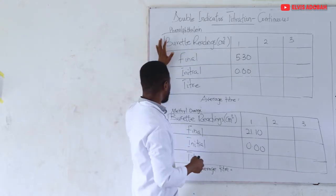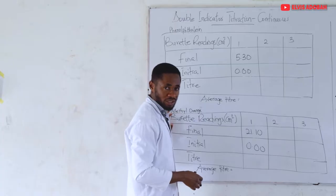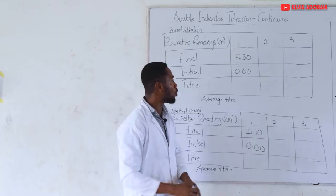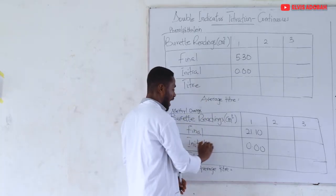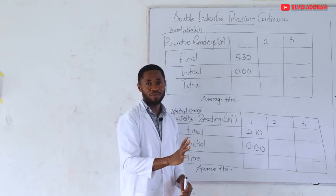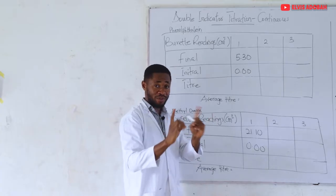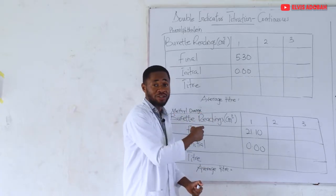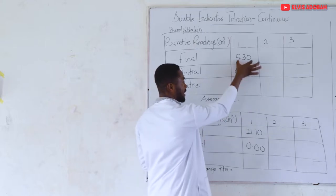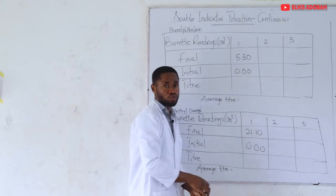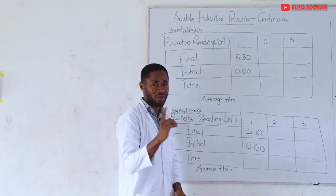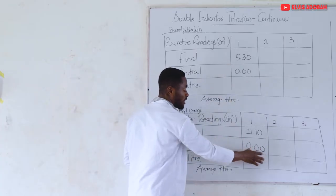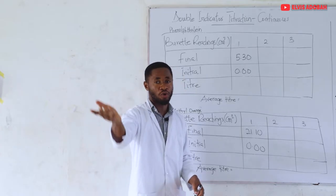We are considering the whole titration as just one set, made up of two components: the phenolphthalein and the methyl orange titrations, but still one titration — we just continued. So we are going to make both initials zero. To calculate the volume of acid required for the methyl orange titration, we just subtract one titre from the other. You can still use 5.30 as your initial, which is also correct.